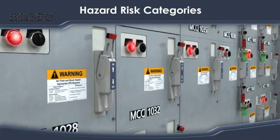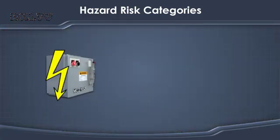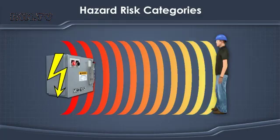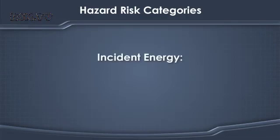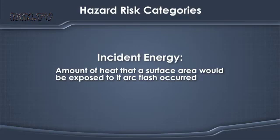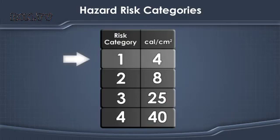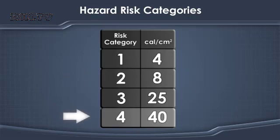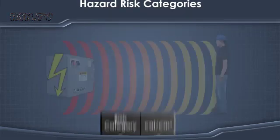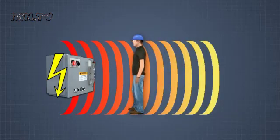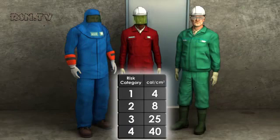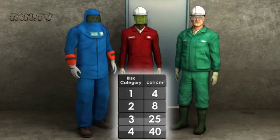NFPA 70E includes hazard risk categories as a way of determining the arc flash danger at a specific distance from energized equipment. The hazard risk categories are based on incident energy — the amount of heat that a surface area would be exposed to if an arc flash occurred. Incident energy is measured in calories per square centimeter. The categories range from level 1 for up to 4 calories per square centimeter to level 4 for 40 or more calories per square centimeter. As you get closer to live equipment, the potential incident energy increases, and therefore the risk level also increases.